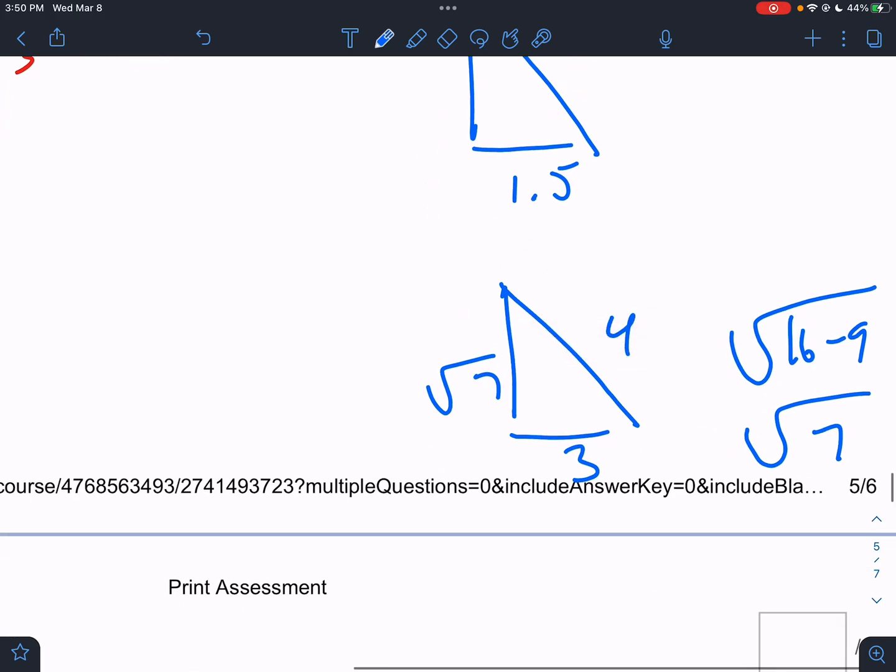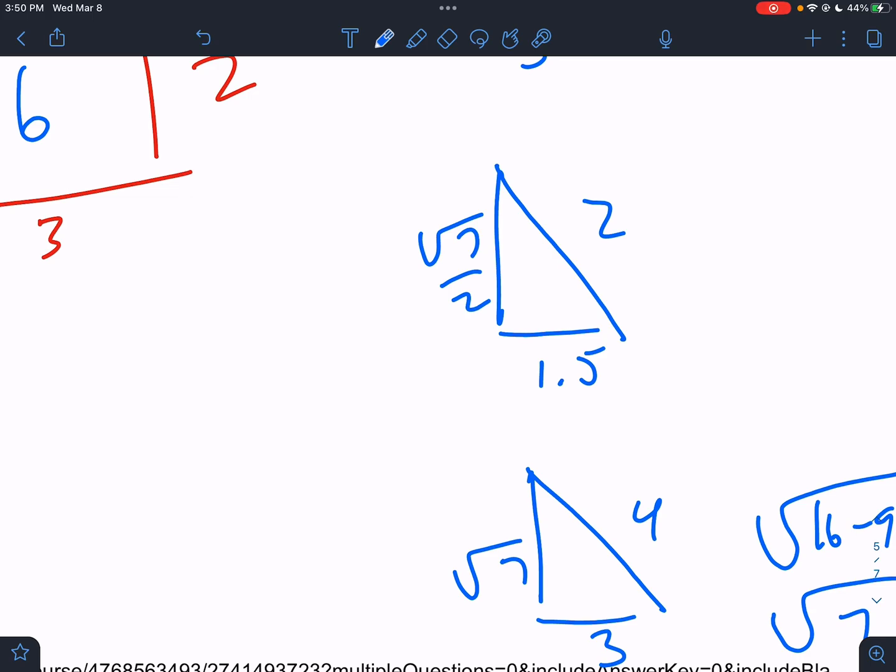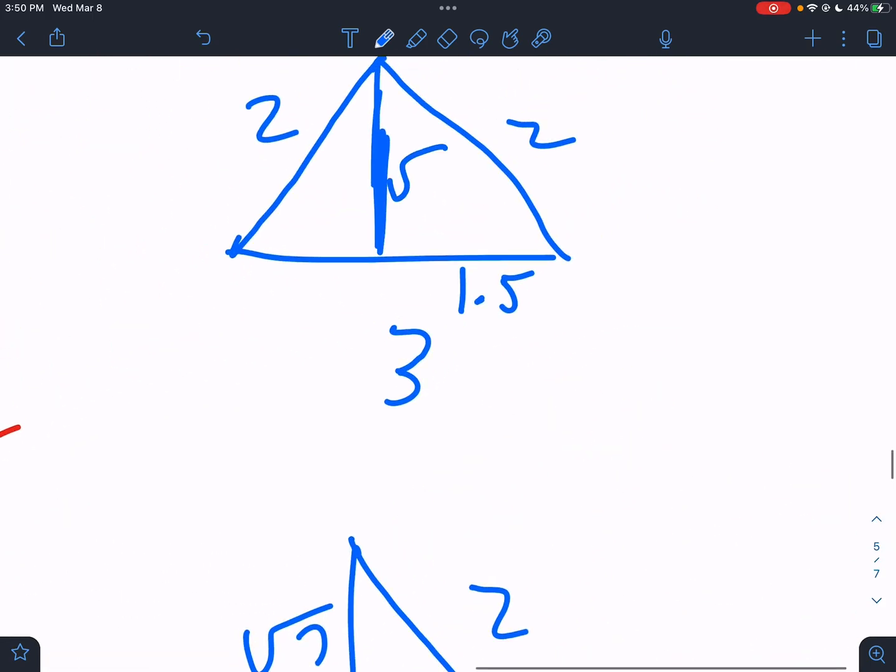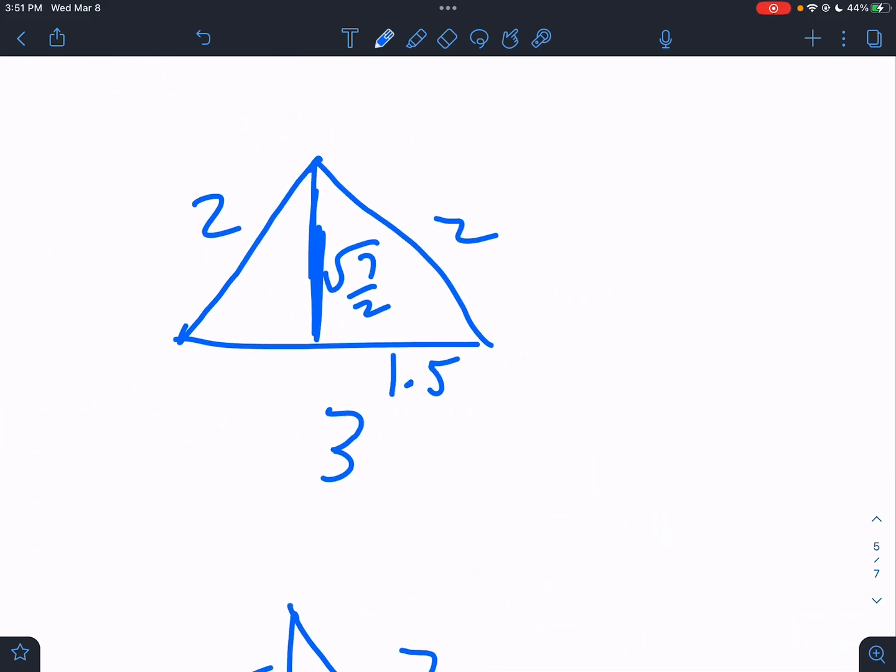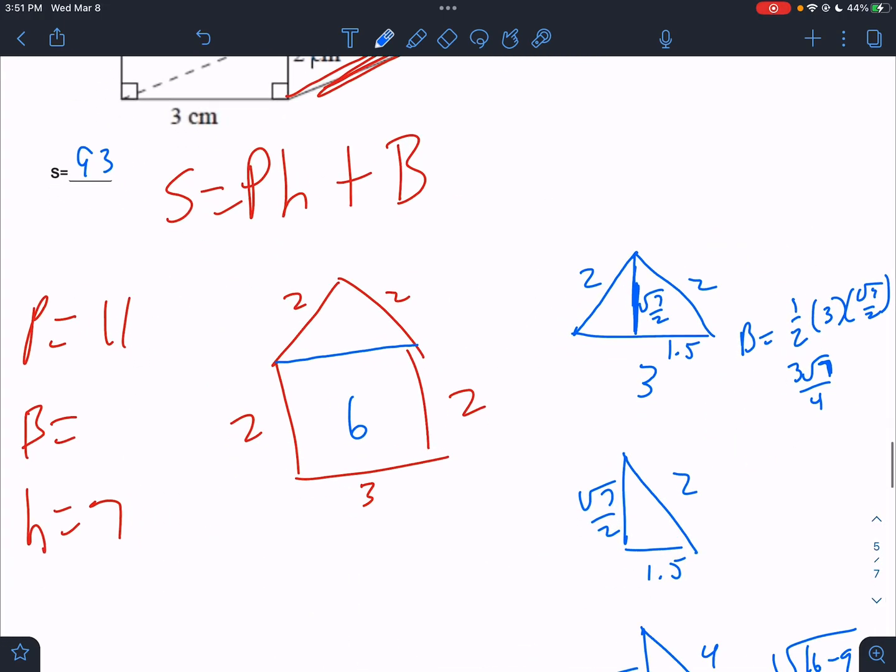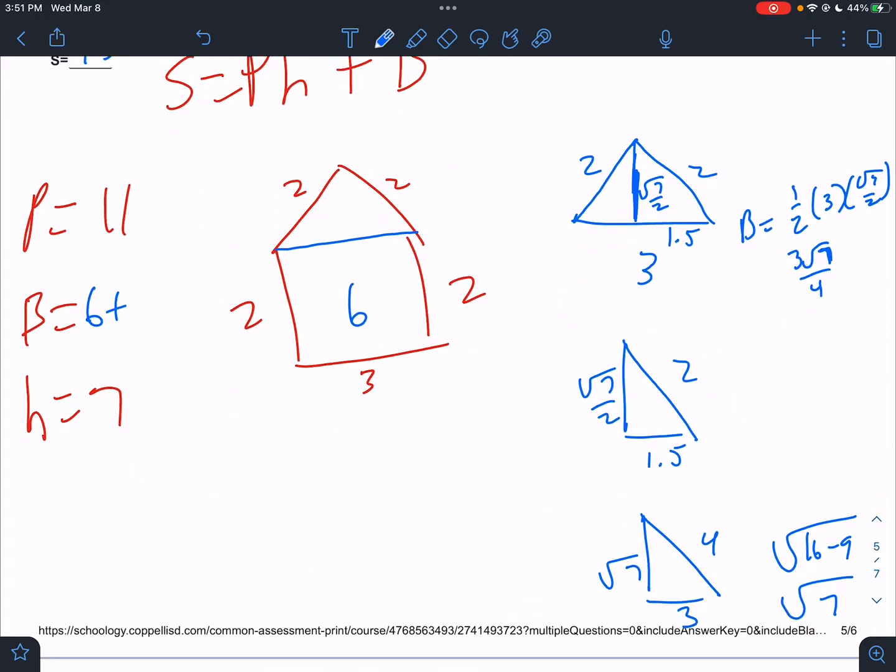But we did... But these numbers are 2 times as big. So we'd have to divide by 2. So that would be root 7 over 2. So this would be root 7 over 2. I'm going to type it in my calculator just to confirm. But it would be 4 minus 1.5 squared. Negative root 7 over 2. Okay. So the area would be 1 half times 3 times root 7 over 2. Clean that up. That would be 3 root 7 over 4. So the area of the base is 6 plus 3 root 7 over 4.